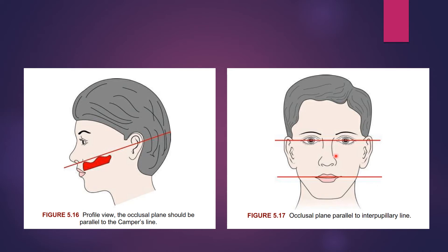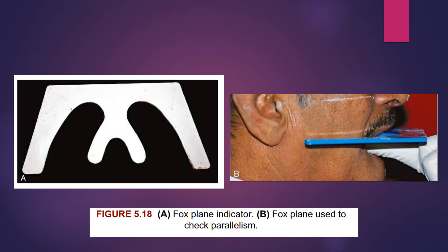The occlusal plane should be parallel to the interpupillary line. This is the Fox plane indicator, which is mainly used to check the parallelism. It is inserted in the patient's mouth to check the parallelism.